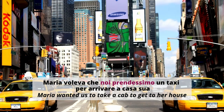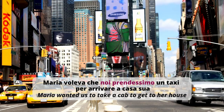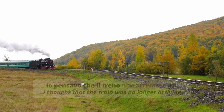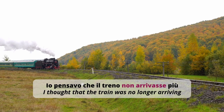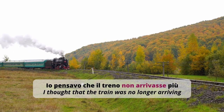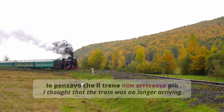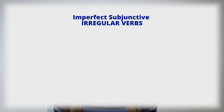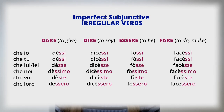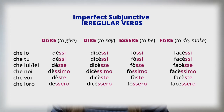'Scrivere' — 'io scrivevo' becomes: che io scrivessi, che tu scrivessi, che lui scrivesse, che noi scrivessimo, che voi scriveste, che loro scrivessero. 'Sentire' — 'io sentivo' becomes: che io sentissi, che tu sentissi, che lui sentisse, che noi sentissimo, che voi sentiste, che loro sentissero. Examples: 'Maria voleva che noi prendessimo un taxi per arrivare a casa sua'; 'io pensavo che il treno non arrivasse più.' Most common irregular verbs are also irregular in the imperfect subjunctive and must be memorized.